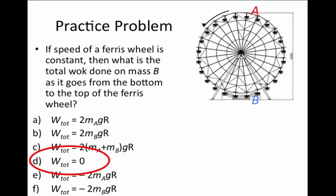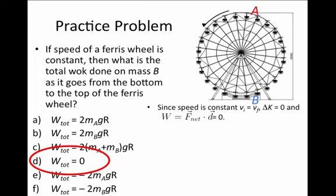Well, it turns out that the correct answer here is zero. The total work done on mass B is actually zero because the speed is constant, which means our initial speed equals our final speed, and therefore the change in kinetic energy is zero.